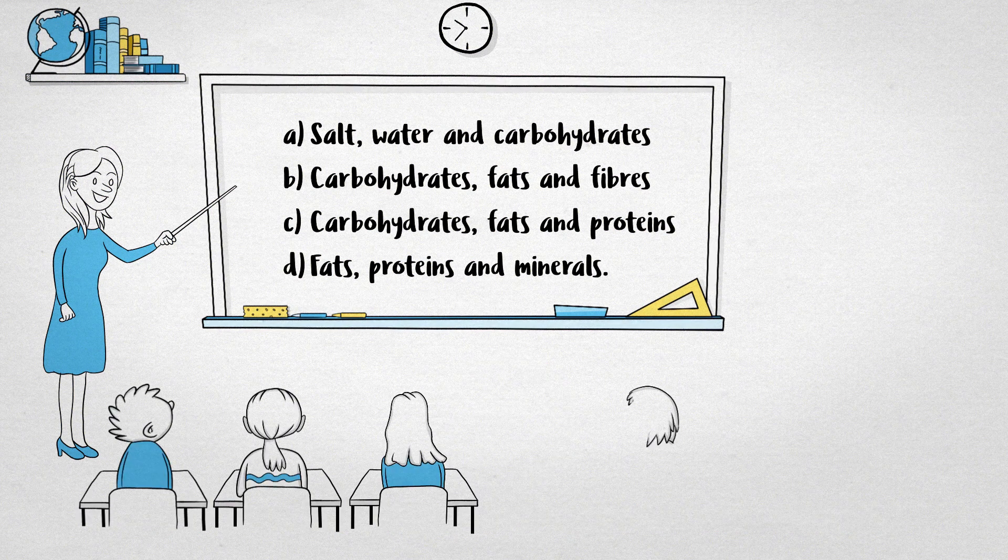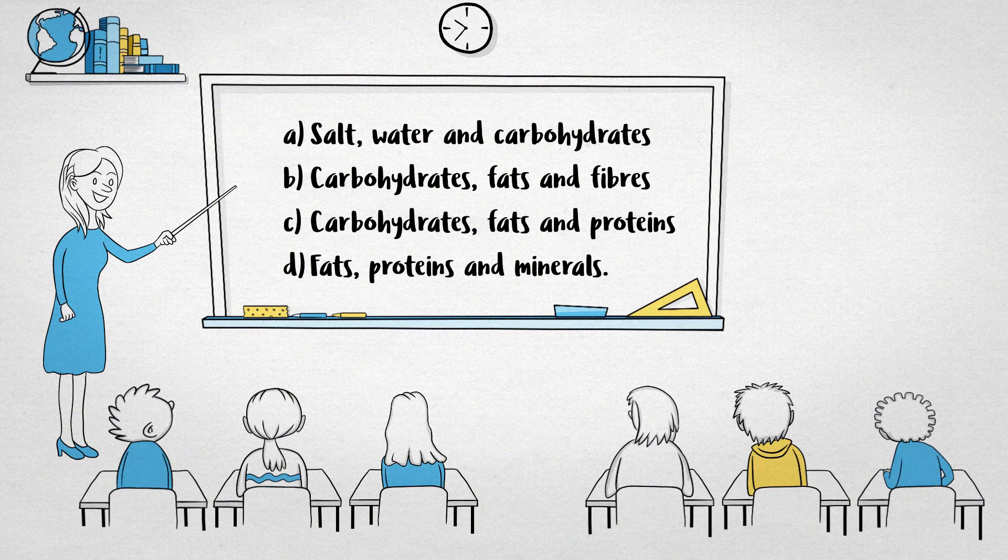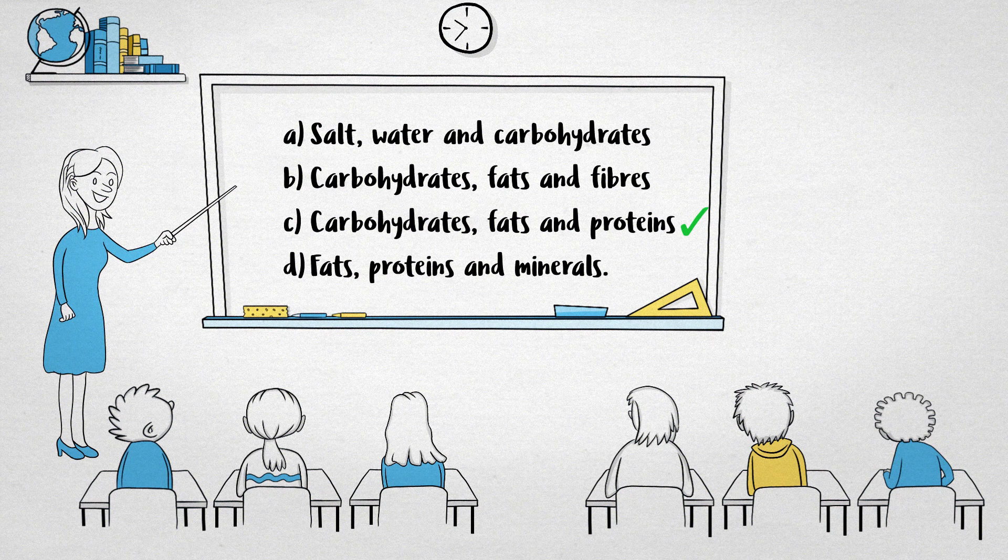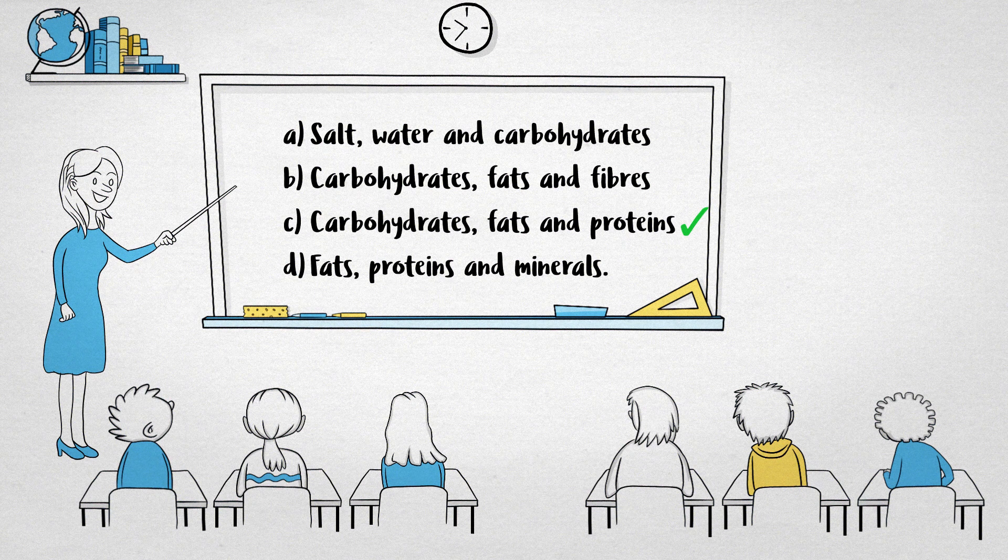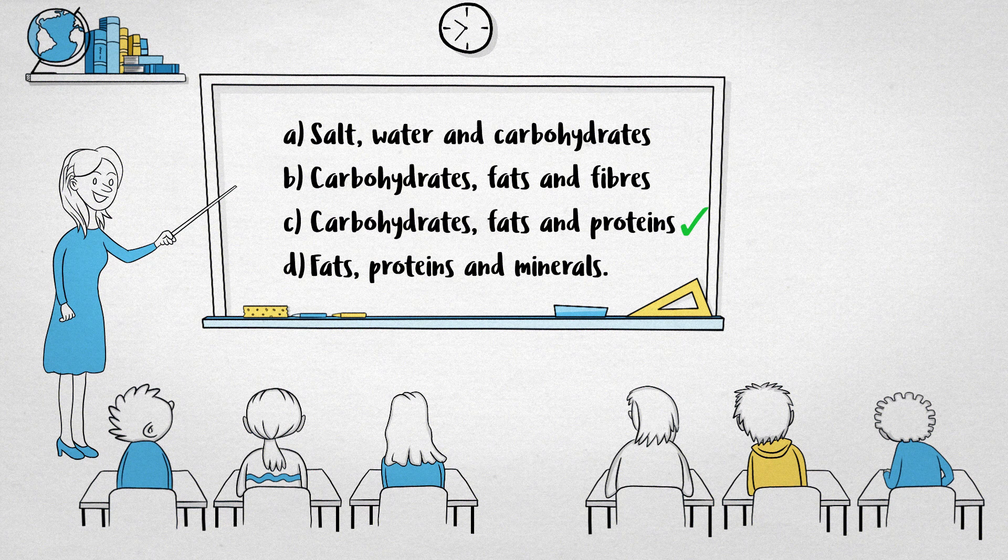The food we eat is made up of three main nutrients: carbohydrates, fats and proteins. Other smaller nutrients, such as vitamins and minerals, are also present. Each of the three main nutrients are important. Here's why.